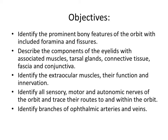We will describe their function and their innervation. We will also have to identify all of the sensory, motor, and autonomic nerves of the orbit, and we will trace their roots to and within the orbit. And last but not least, we are going to identify the branches of the ophthalmic arteries and veins.